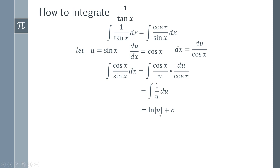The last step is to remember that we took u equals sin x. That was our substitution we made all the way back there. So to get the final answer we just have to replace u with sin x. So this now is the final answer, the integral of one over tan x is ln of the absolute value of sin x plus c.